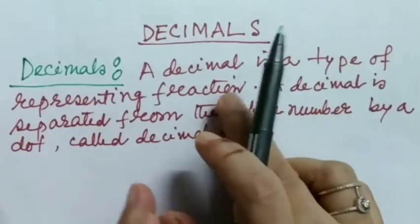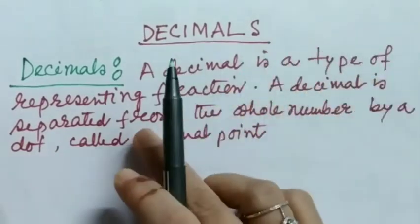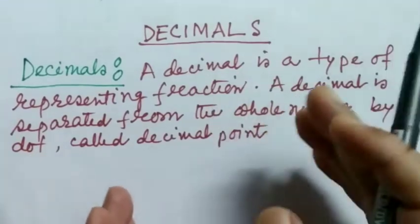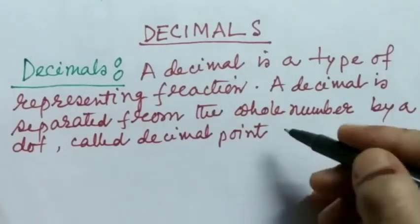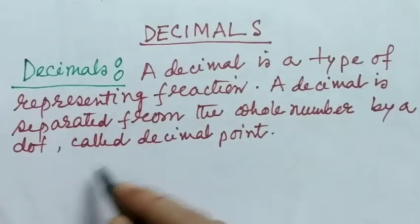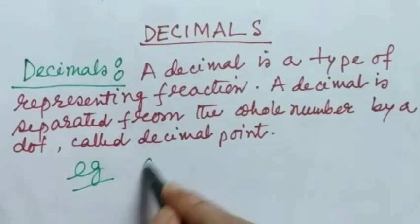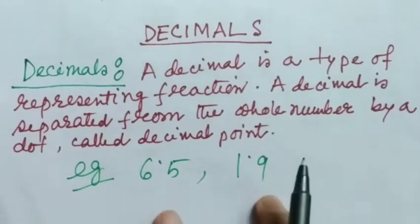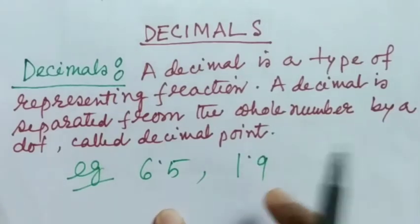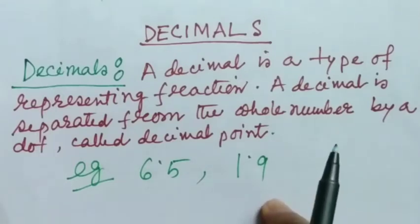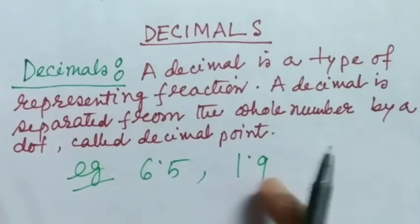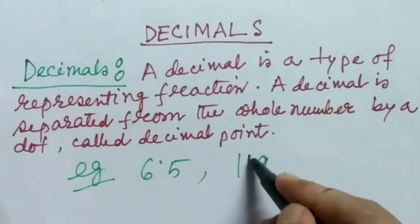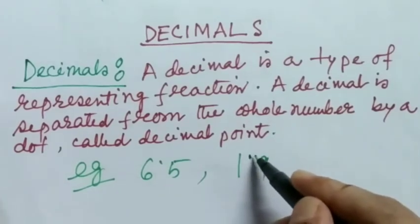Decimals. A decimal is a type of representing fraction. A decimal is separated from the whole number by a dot called decimal point. For example, 6.5 or 1.9. These are all examples of decimals and we read like 1.9, 6.5 — and this dot is called decimal point or simply point.